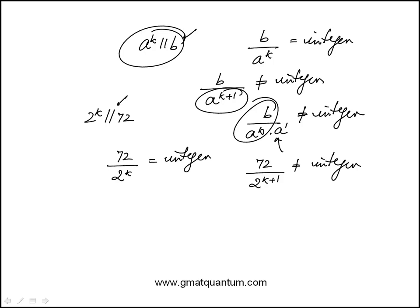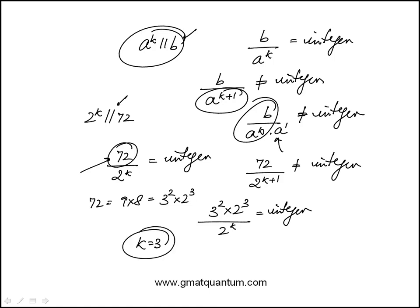So here I'm going to do the prime factorization of 72, which is 9 times 8, which is 3 squared times 2 to the cube. So essentially 3 squared times 2 to the 3 over 2 to the k is an integer. And so k here is 3, because that would be an integer.